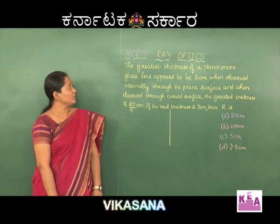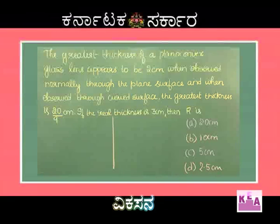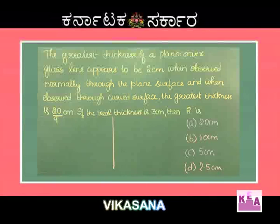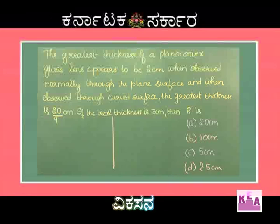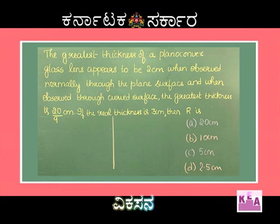Let's move on to the next question. The greatest thickness of a plano-convex glass lens appears to be 2 cm when observed normally through the plane surface, and 20/9 cm when observed through the curved surface. If the real thickness is 3 cm, calculate the radius of curvature of the spherical surface. Options: A. 20 cm, B. 10 cm, C. 5 cm, D. 2.5 cm.